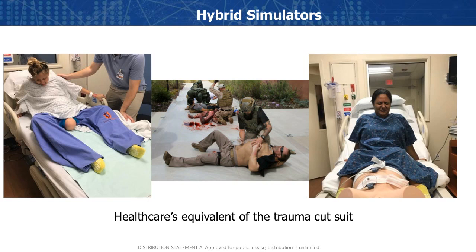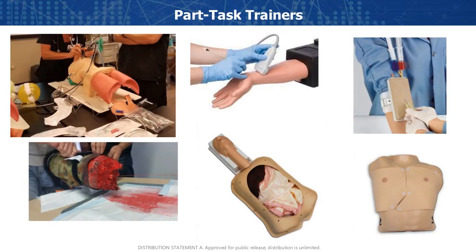Part task trainers are models representing just a specific anatomical part, focusing on one or two tasks. They're designed to be inexpensive so you can train a fairly simple task — tourniquet placement, needle placement for drawing blood — without associated costs. They're used in simulation primarily to build muscle memory. Some more advanced devices provide medical or electronic feedback on procedural skills, but typically they're kept basic so learners can practice repetitively.